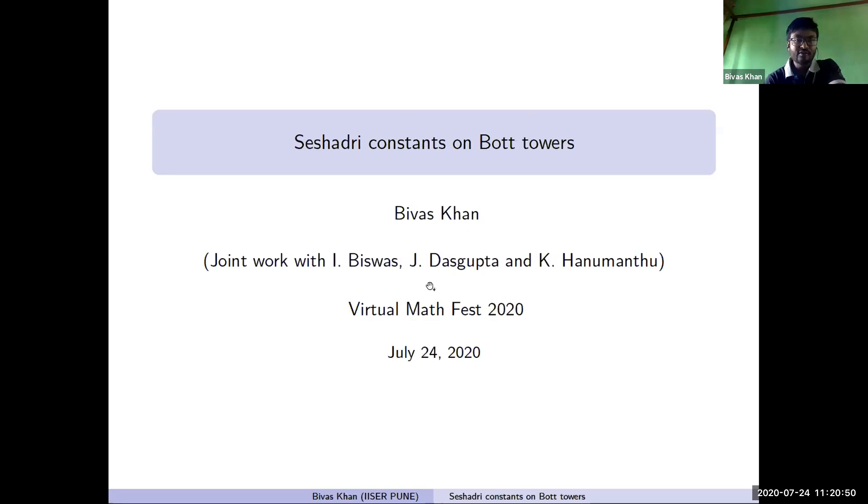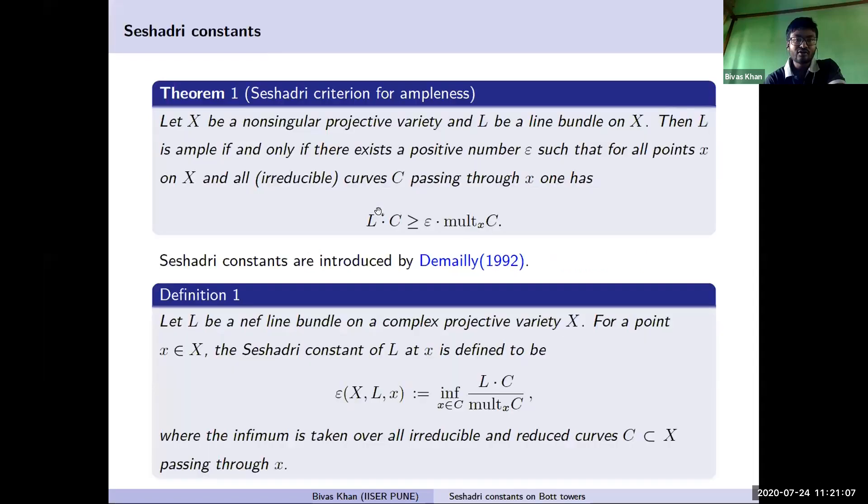I will take a non-singular projective variety. A line bundle L is ample if and only if there exists a positive number epsilon such that for all points x and curves C passing through x, the intersection L dot C is greater than or equal to epsilon times the multiplicity of x. So it is natural to ask for the optimal value of epsilon in this theorem. This leads to the definition of Seshadri constants.